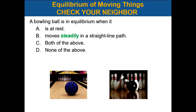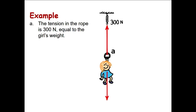Multiple choice: a bowling ball is in equilibrium when it — A: is at rest, B: moves steadily in a straight line path, C: both of the above, or D: none of the above. A bowling ball in equilibrium could be at rest or could move steadily — same speed in a straight line. So the correct answer is C: both of the above.